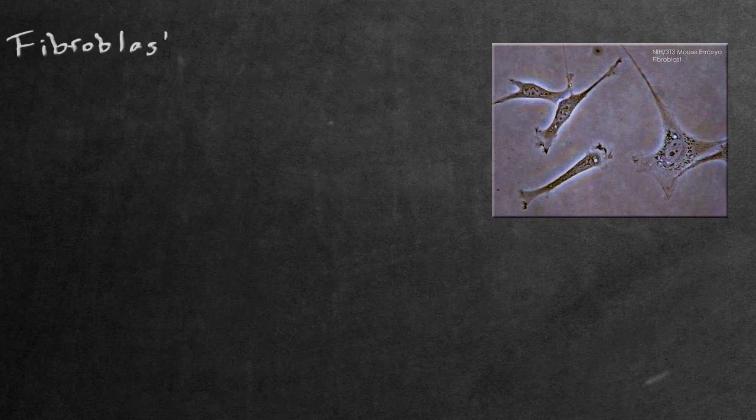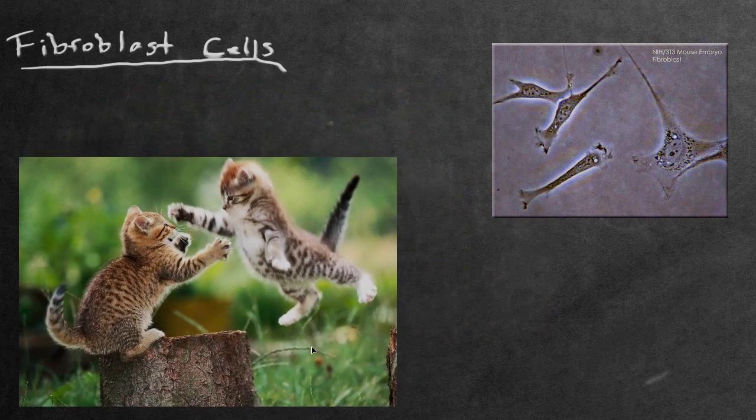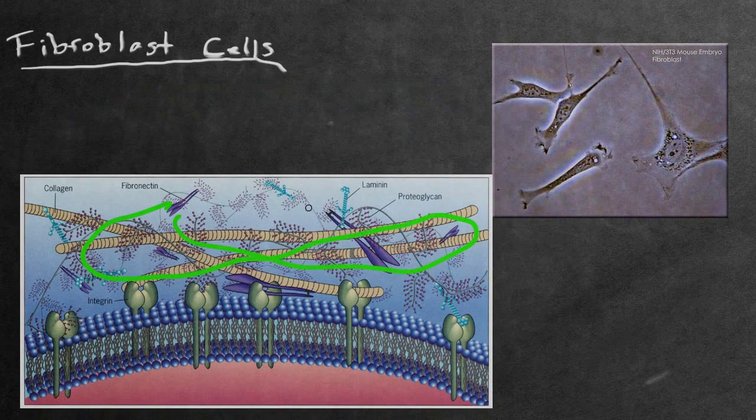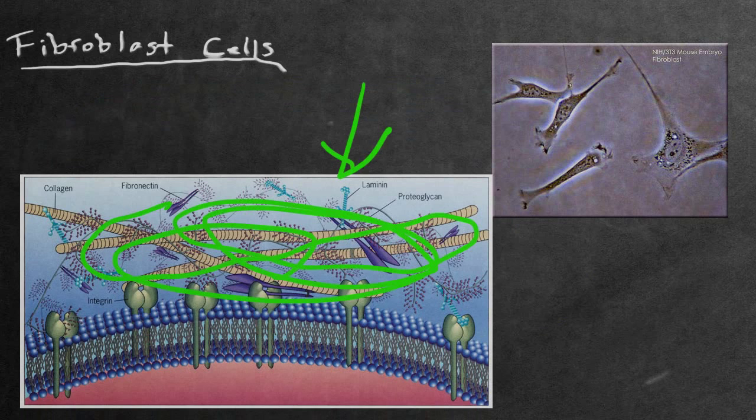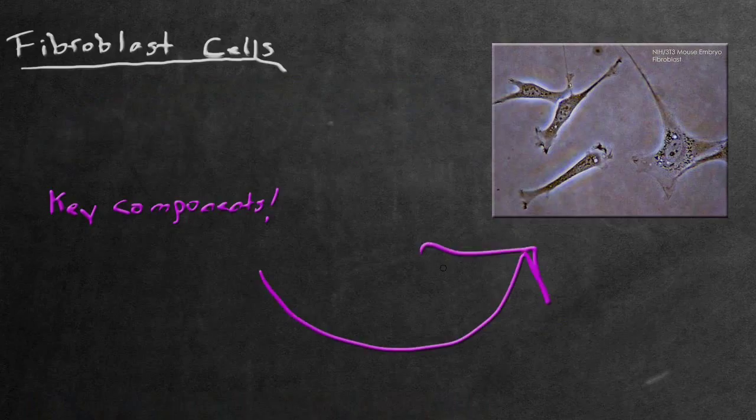Today's topic is going to be about the fibroblast cell. The fibroblast cell is the most common cell found in the connective tissue in most animals. Its main function is to synthesize the extracellular matrix and collagen. These two are key components in the structural framework for most animal tissues.